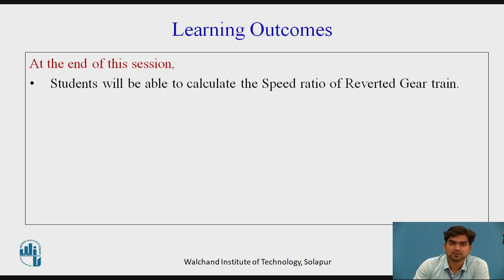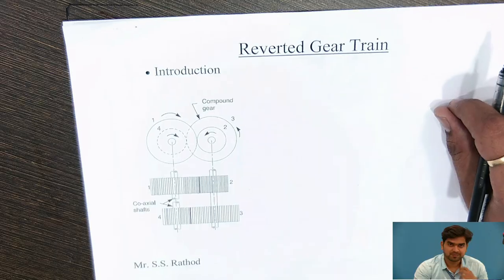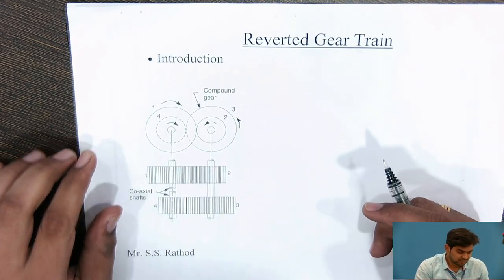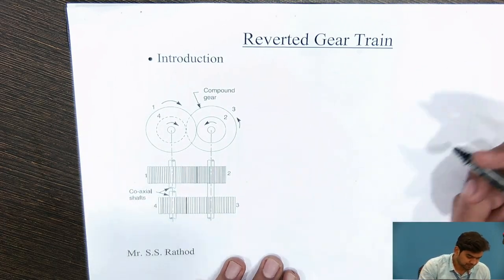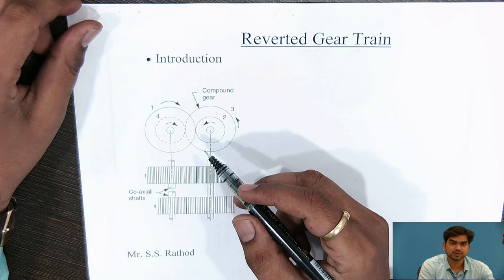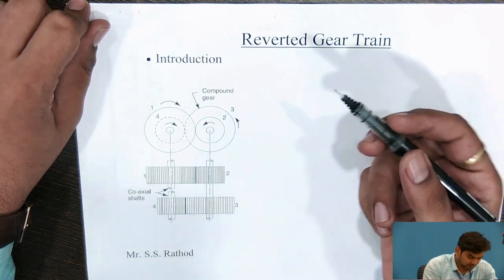So in this session, the learning outcome is: at the end of this session, the student will be able to calculate the speed ratio of the reverted gear train, as shown in the simple diagram.